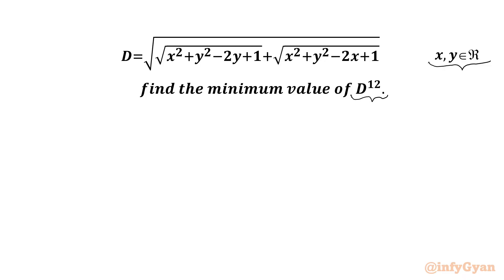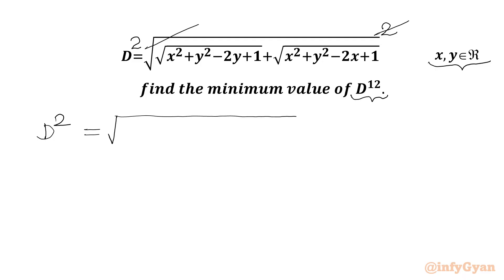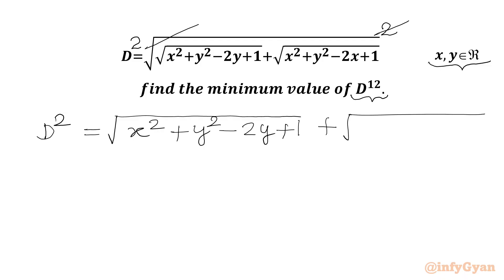Let us get started by squaring both sides — we will put power 2 on both sides. In the RHS we can cancel the square root with the square, and we get d squared equal to square root of x squared plus y squared minus 2y plus 1 plus square root of x squared plus y squared minus 2x plus 1.